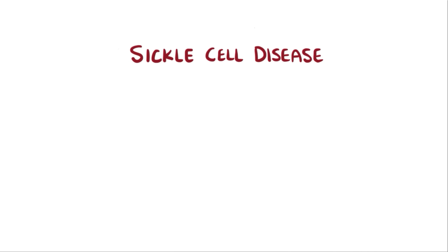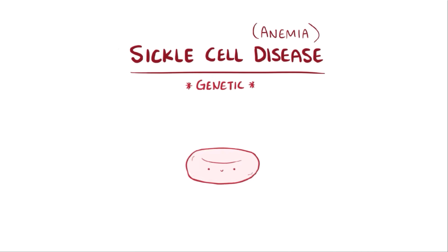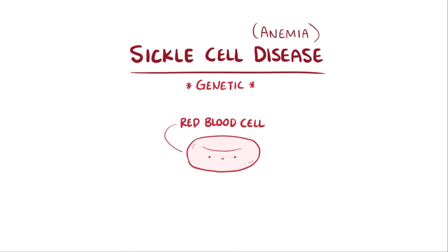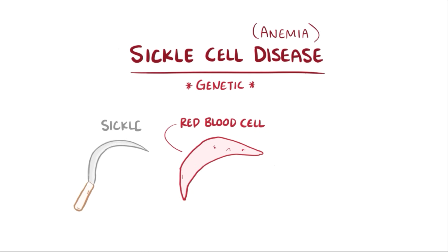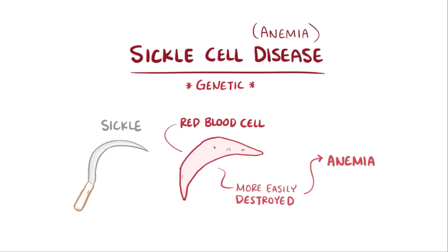Sickle cell disease, also called sickle cell anemia or just sickle cell, is a genetic disease where red blood cells can take the shape of a crescent, or sickle, and that change allows them to more easily be destroyed, causing anemia, among other things.